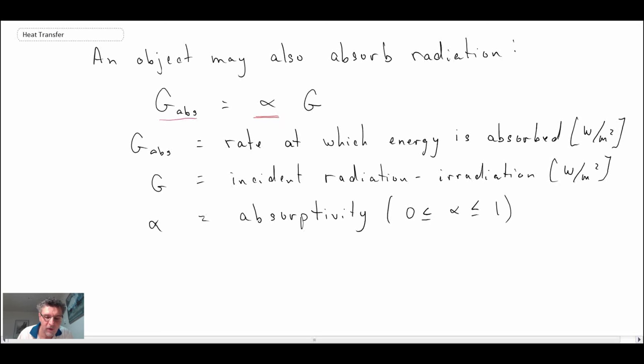And on the right-hand side, then, we have a new term, alpha. That is called the absorptivity. And just like the emissivity, it ranges between 0 and 1. And then we also have this term here. This is the incident radiation, sometimes called the irradiation. And that would be the amount of radiative energy coming onto a particular object.